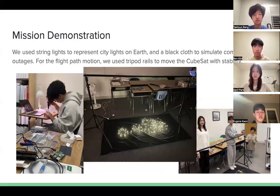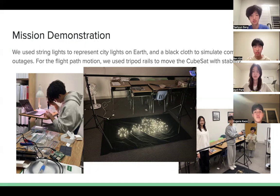This is our mission demonstration. We use string lights to represent city lights on Earth and a black cloth to simulate complete power outages. For the flight path motion, we use tripod rails to move the CubeSat with stability.